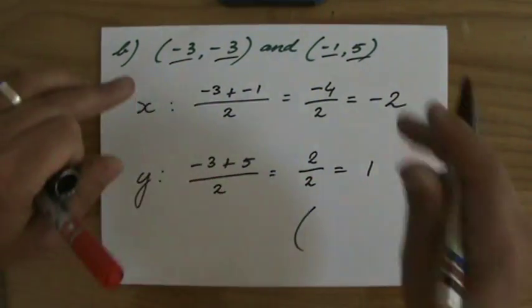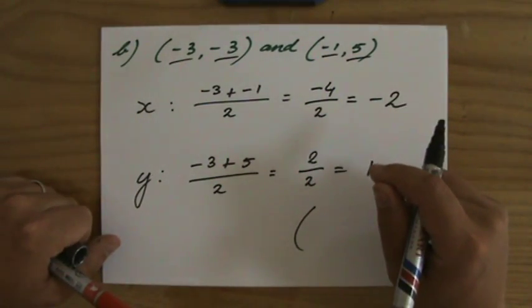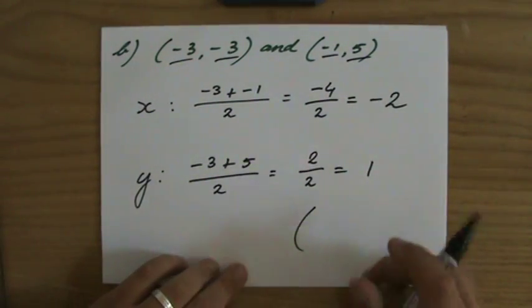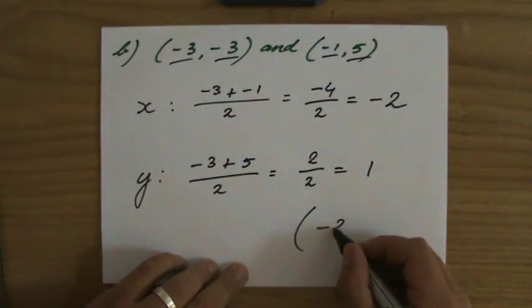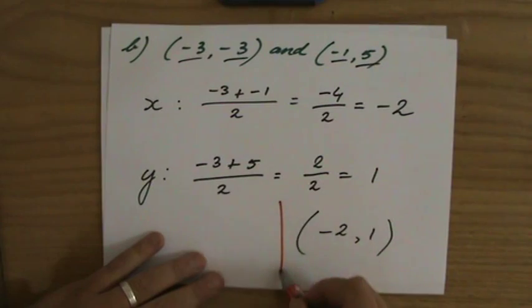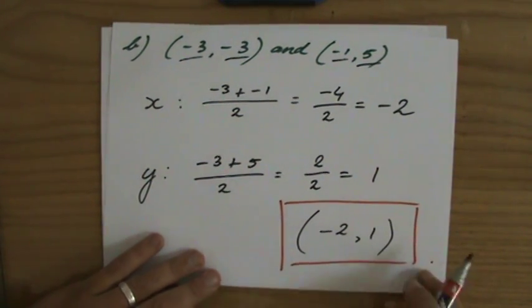So the answer of the midpoint of the line segment connecting these two points - and again, that's a very big and long sentence to understand - but anyway, the answer is (-2,1).